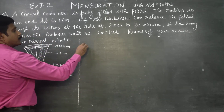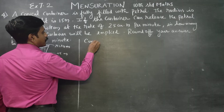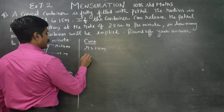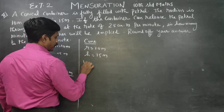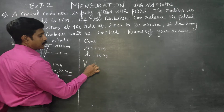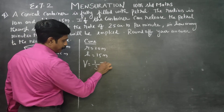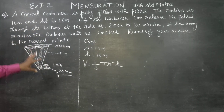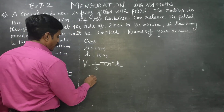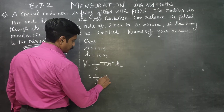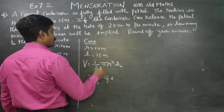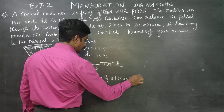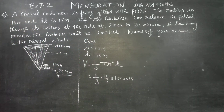First, find the volume of the petrol. Volume = (1/3) × (22/7) × r² × h = (22/7) × 10 × 10 × h, where h is equal to 15. So we have 10 × 10 × 15.